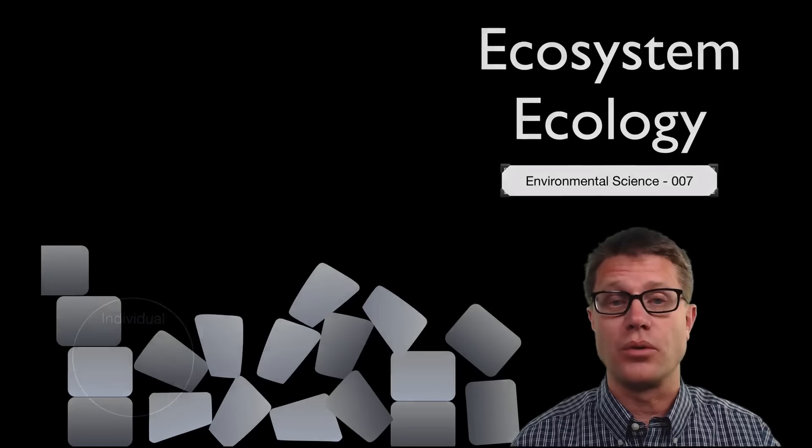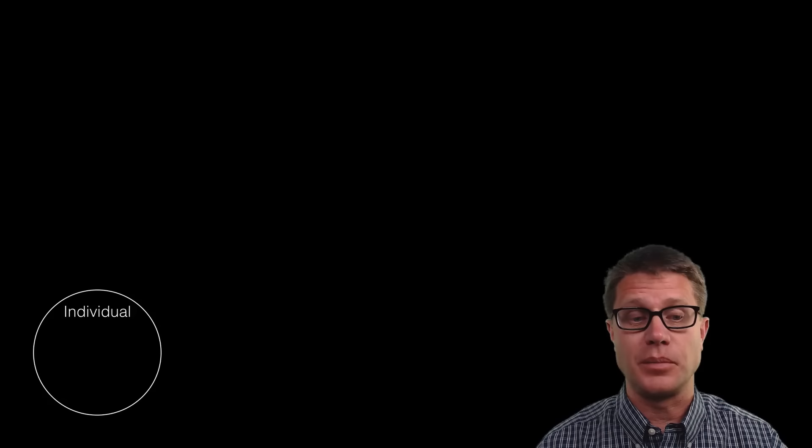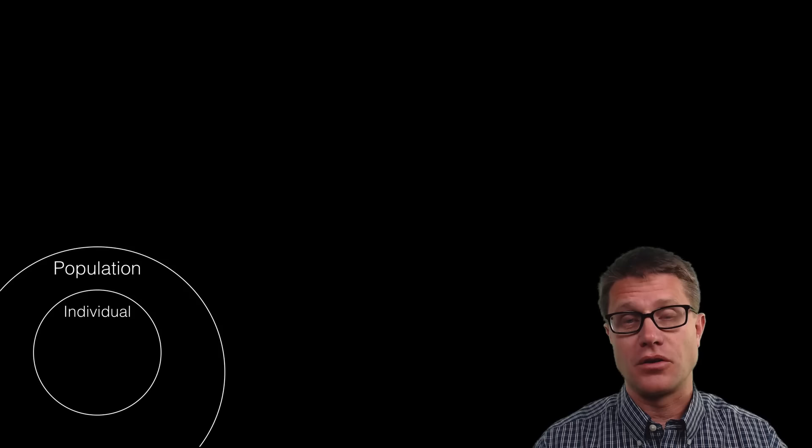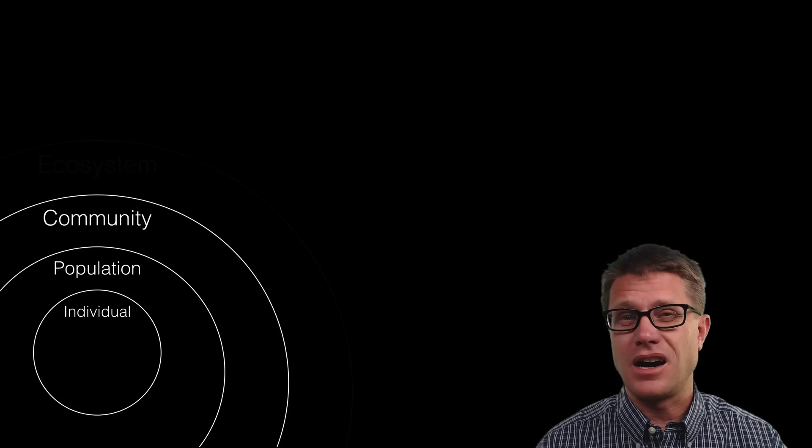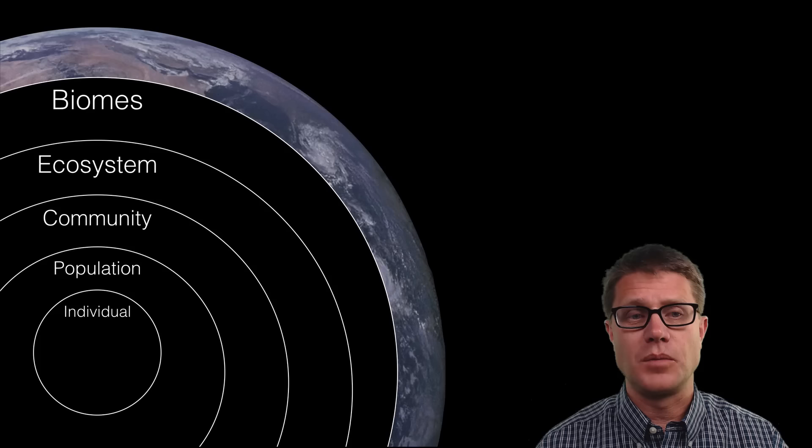Before we get to ecosystems we should understand how life is organized. From the very small, one individual, for example sea urchin, is part of what is called a population or all the sea urchins in an area. We then take all the populations together, that is a community. We then add the non-living material, that is an ecosystem. And then we even have larger areas which are called the biomes. What is larger than the biomes? That is going to be the biosphere. It is going to be our planet.